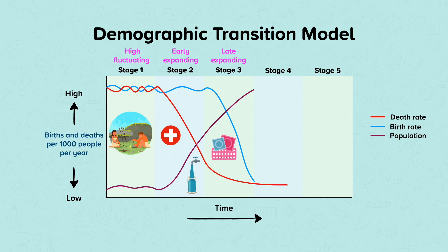Stage four is the stage of most economically developed nations. It sees the death rate stabilize due to a high quality standard of living. The birth rate is also low because it is now normal for both men and women to work and pursue opportunities, so people have children later in life. The birth rate can fluctuate a little depending on the economic circumstances at the time, and population also levels off and fluctuates, so this stage is called the low fluctuating stage.